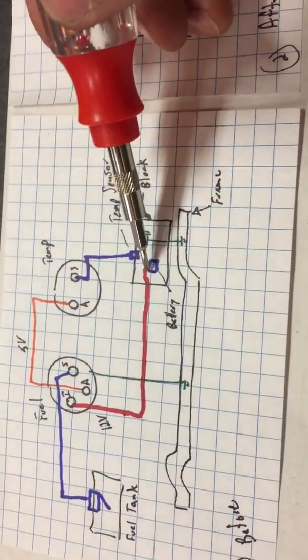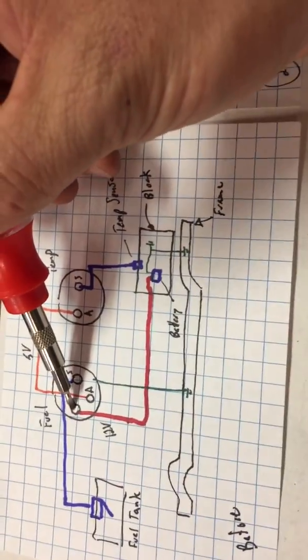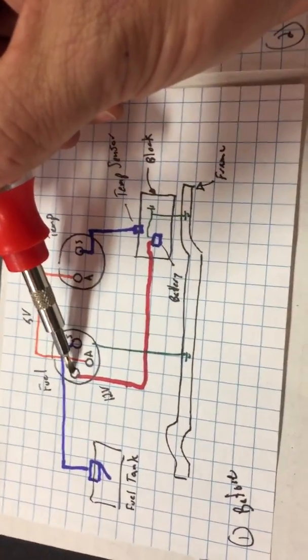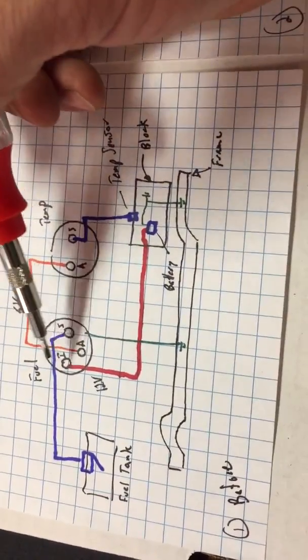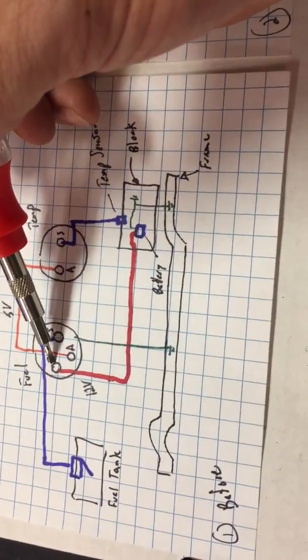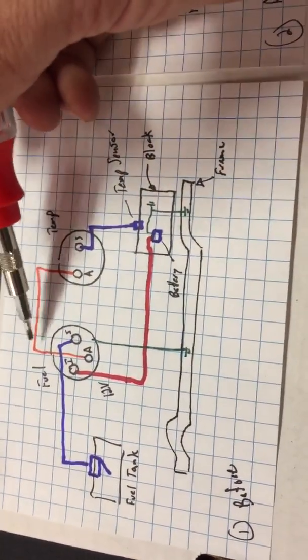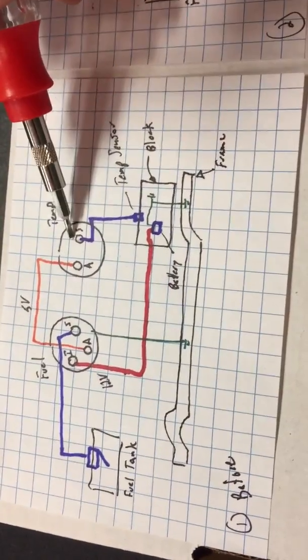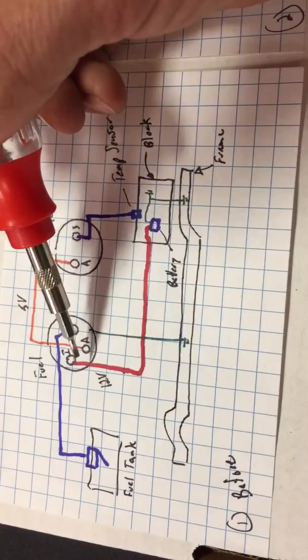As far as wiring, you have a 12-volt source coming from the battery over to point I on the fuel gauge. And as we mentioned earlier, there's actually an internal voltage regulator or step-down, essentially a resistor, that goes from 12-volt and steps it down to 5 volts, which is what both the fuel gauge and the temperature gauge operate off of.